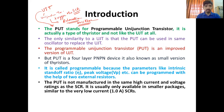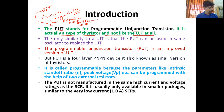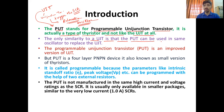The PUT stands for Programmable Unijunction Transistor. It is actually a type of thyristor and not like the UJT at all. इसके नाम में UJT जरूर है, but यह UJT की तरह नहीं काम करता है — it is basically the type of SCR. The only similarity to UJT is that the PUT can be used in the same oscillator to replace the UJT.